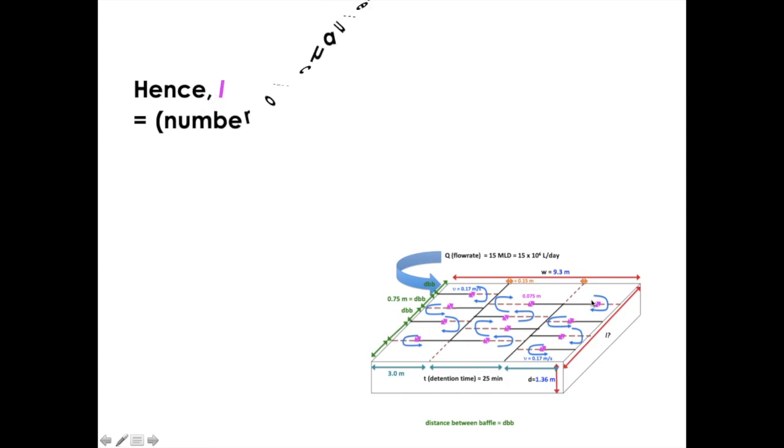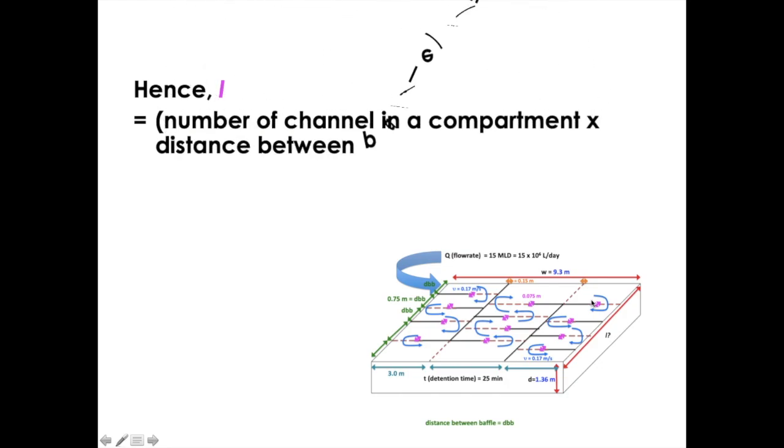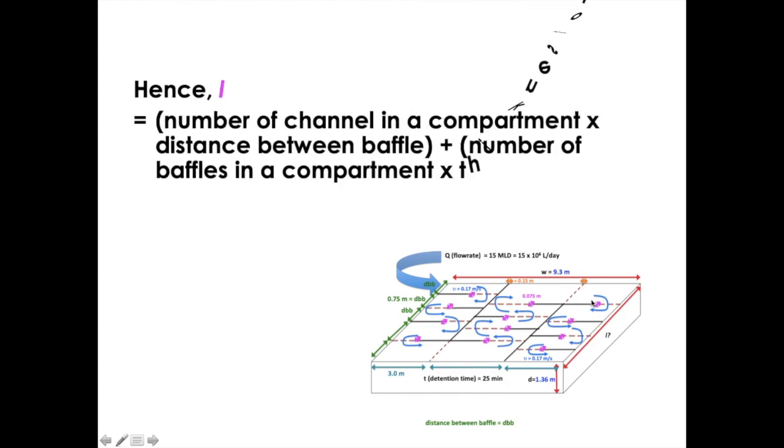So our length is number of channels in a compartment times the distance between baffles plus number of baffles in a compartment times the thickness of baffles. So 46 times 0.75 meters, 45 for the number of baffles times 0.075 meters.